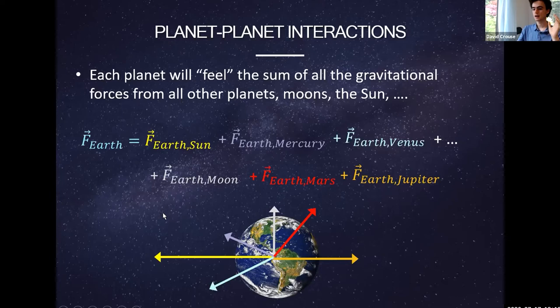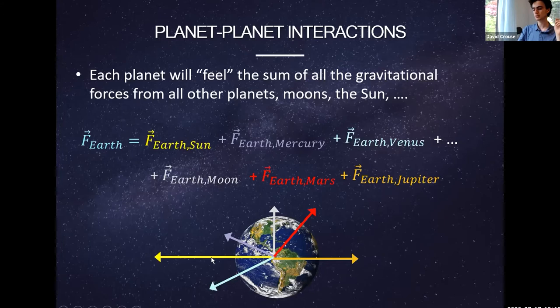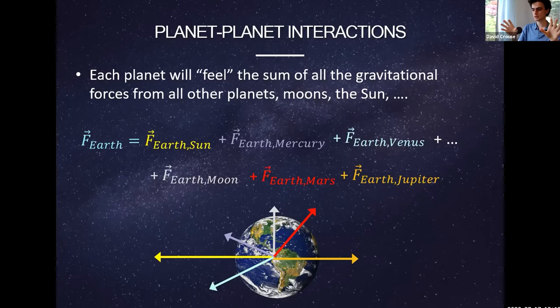Does anyone have questions on how the earth experiences one total force from all of these smaller forces? The moon force seems like it will be different because it's going around the earth — this little arrow will constantly be rotating like a needle on a clock. But it's treated the exact same way as any of the other forces, even though it moves differently. It's treated with the same Newton's law of gravity that all of the other forces are treated with.